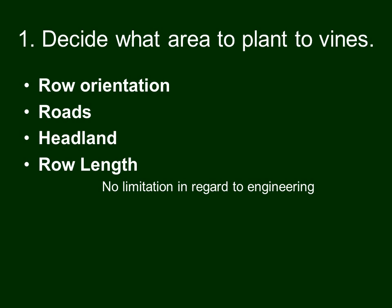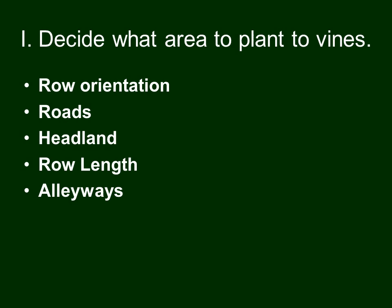There may not be an engineering limitation to row length, but there could be a limitation in regard to efficiency of operation — doing various types of hand work like pruning, suckering, or tying. How do people halfway down a very long row get in and out of the vineyard efficiently? How do you manage during hand harvesting if your equipment is halfway down a very long row and something happens to the tractor? You may want to limit row length based on efficiency. The answer is to at times put a break in the vineyard called alleyways.